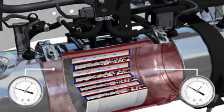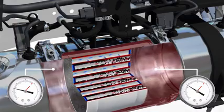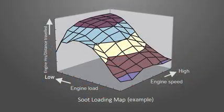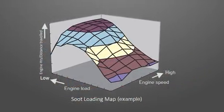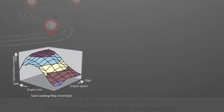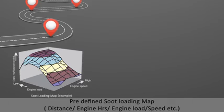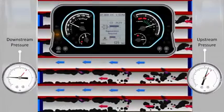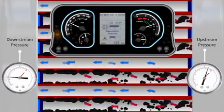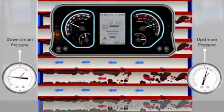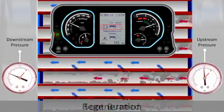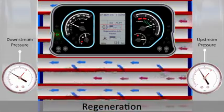As the soot accumulates inside the DPF, the delta P increases. There is a predefined soot loading map in the ECU taking into account the distance covered, engine running hours, load, speed, and various other factors. Once the delta P increases beyond a threshold value, the soot will get burned up and converted to ash by a process called regeneration.